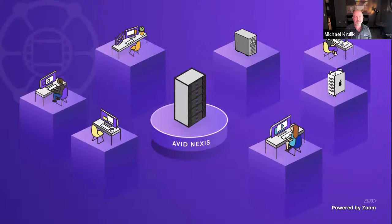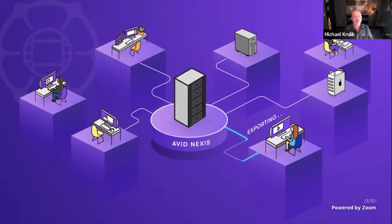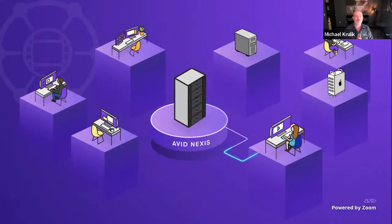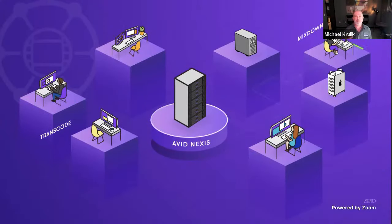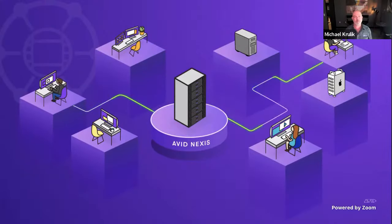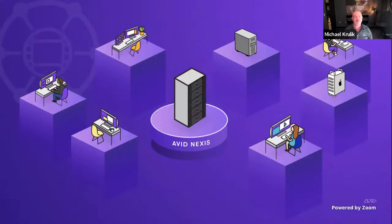So what does distributed processing do? We have our editor who's working and exporting to Nexus, which is the heart of the collaboration but also the heart of distributed processing. You'll see that the processes can be sent out to worker nodes — idle workstations, or workstations that aren't being used. You can connect them as DP workers, and simultaneous processes like mixdowns and exports can happen. Everybody is still working — all of this is happening in the background.